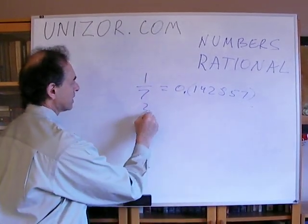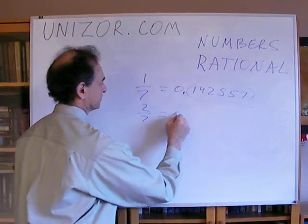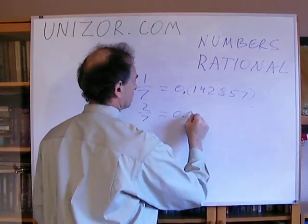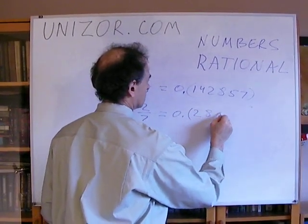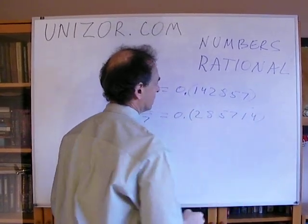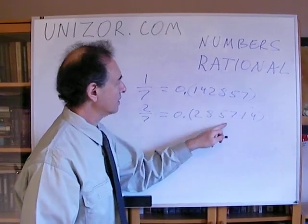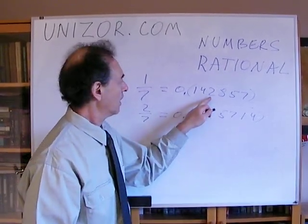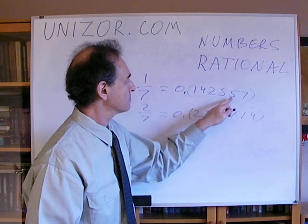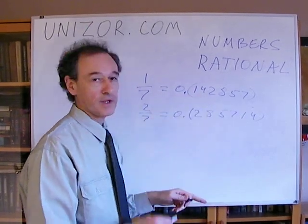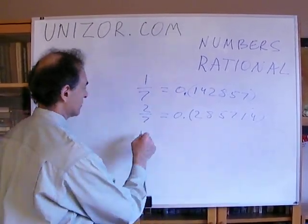If you take two-sevenths, it will be 0.285714 in period. Notice that it's exactly the same digits here, and you have to start 285714. It's like a cyclical representation of the same thing.